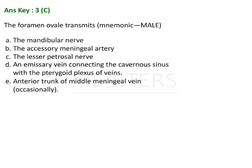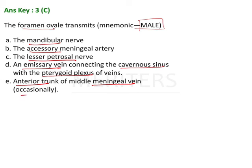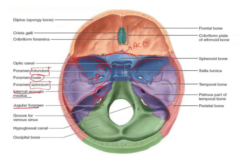Quickly, the explanation: the foramen ovale transmits — mnemonic MALE — M is mandibular nerve, A is accessory meningeal artery, L is lesser petrosal nerve, and E is emissary vein that connects the cavernous sinus and pterygoid plexus of the vein. The anterior trunk of the middle meningeal vein occasionally passes through this foramen as well.